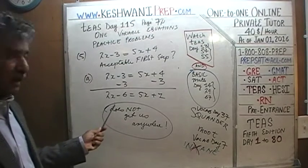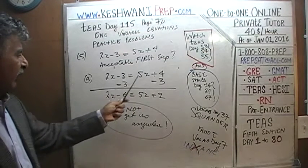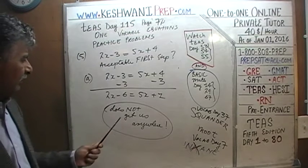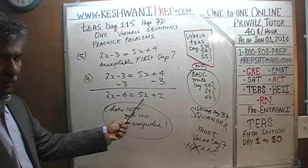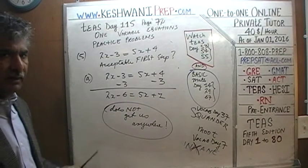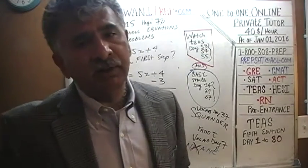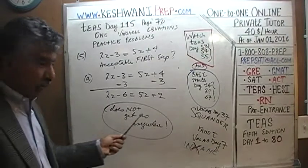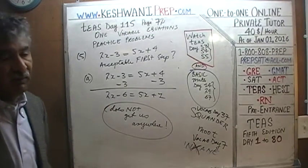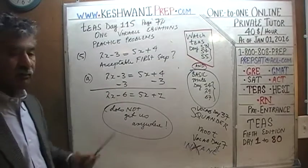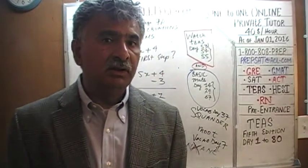That really didn't achieve anything. We wanted to get rid of the 3, or get rid of 5x, or do something. We have unknown quantities on both sides and known quantities on both sides — we have not done anything. That is not an acceptable step; it's a waste of time. Mathematically it's not wrong — this equation is a true equation — but it didn't achieve anything. The step has to be of such a nature that it achieves something.